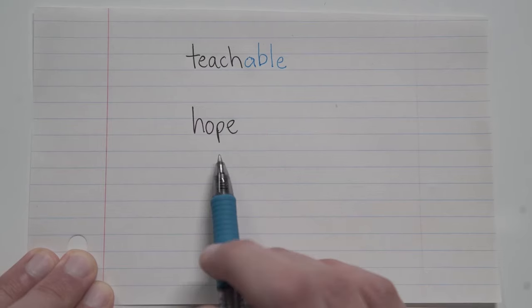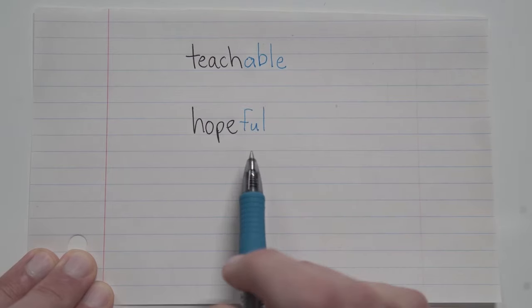Or maybe I have the word hope. Hope is an idea, a concept, it's a noun. But if I add the suffix ful to the end of it, it becomes hopeful, which is a description, an adjective. Someone who has a lot of hope is hopeful.